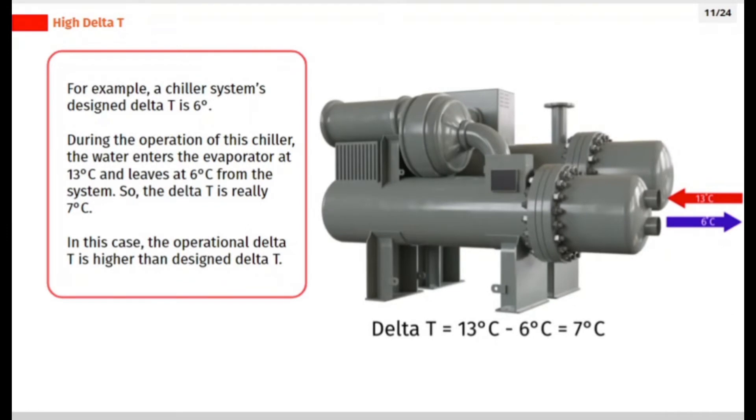For example, a chiller system's design delta T is 6 degrees. During the operation of this chiller, the water enters the evaporator at 13 degrees Celsius and leaves at 6 degrees Celsius from the system, so the delta T is really 7 degrees Celsius.